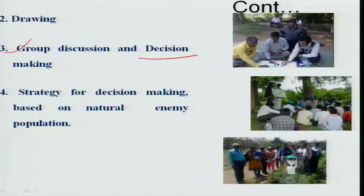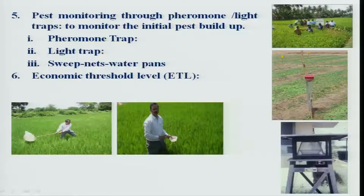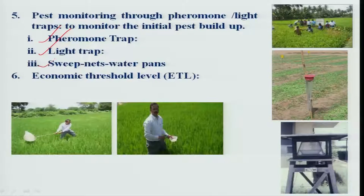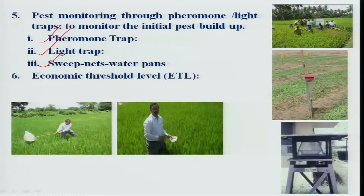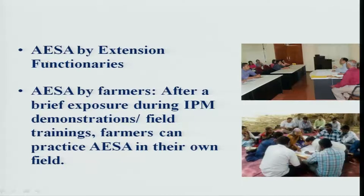Afterwards, after taking a decision, they have to work out the overall natural enemy population, whether the particular situation needs any control measures or not. One can also take decisions based on pest population dynamics by taking observations from pheromone traps, light traps, sweep nets, and water pans for making observations on insect pests and natural enemies. They also have to work out the economic threshold level of the particular pest before taking suitable decisions.